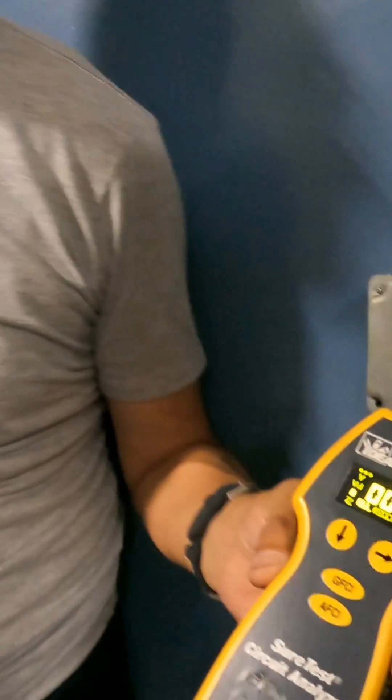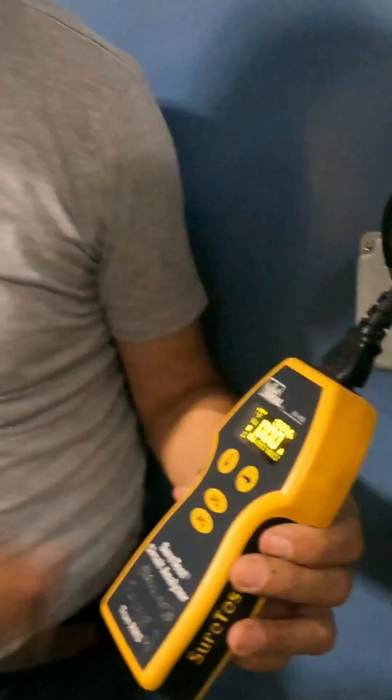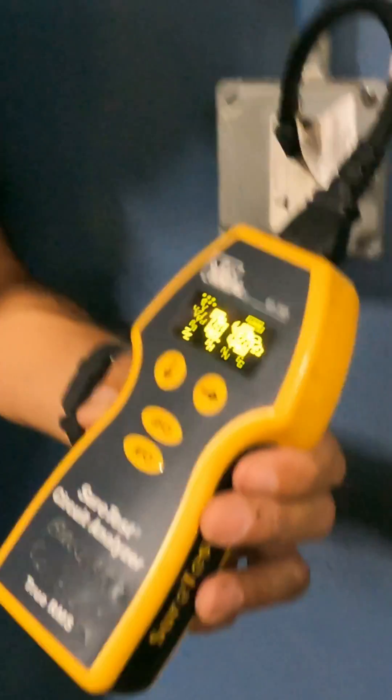Now we are going to check amps - look at the leak, zero amps. We are going to check resistance impedance. Okay, 0.1 ohms, which is less than 1.2.